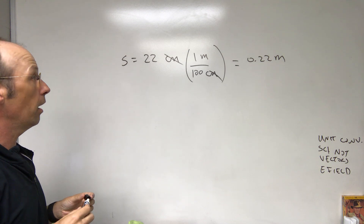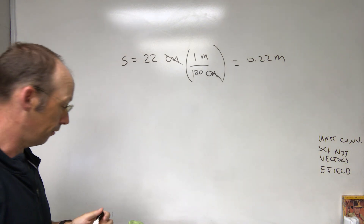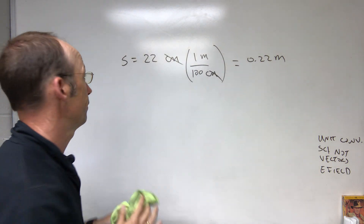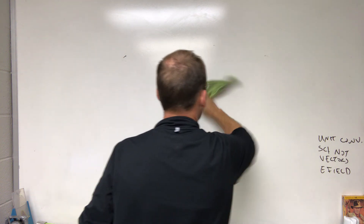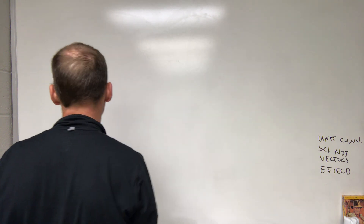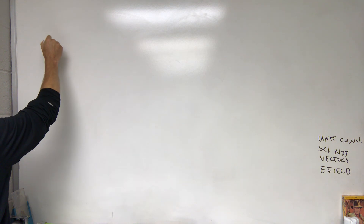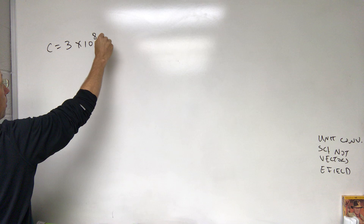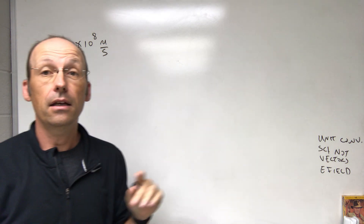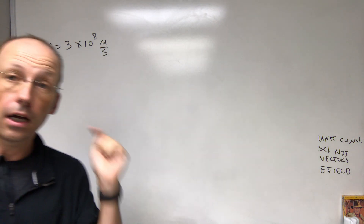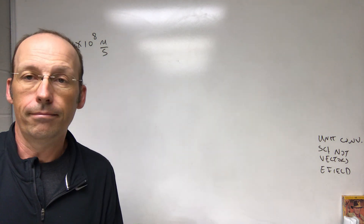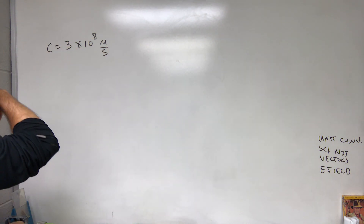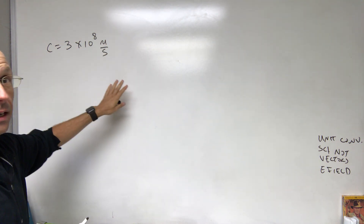The key is always multiply by 1. Let's do a more involved example. I want to convert the speed of light, c = 3 × 10⁸ meters per second, into units of kilometers per hour. We have two units to convert — meters to kilometers, and seconds to hours — so we'll do it one at a time.